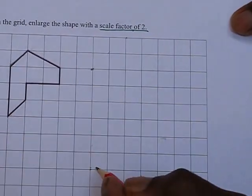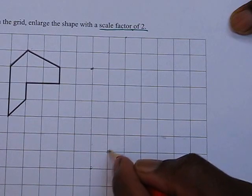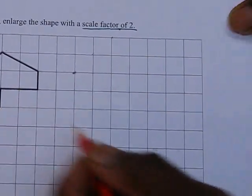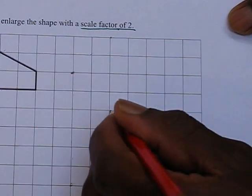Likewise this length is 1 diagonal so it will be 2 diagonals, 1, 2 and it will go to there. This length is 1 so it will be 2, 1, 2 and it will go to here.